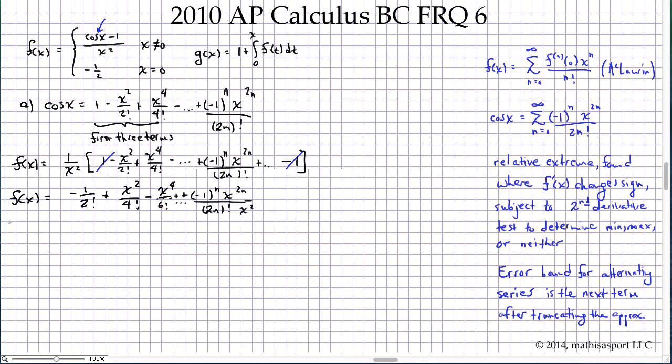Part b asks whether we have a relative max, min, or neither. We need to evaluate the first derivative and see if it's changing sign, then use the second derivative test. Because the derivative exists at all points in question, namely at x equals 0, we'll use the first derivative test to see that we get 0 for the first derivative. That's a necessary but not sufficient condition.